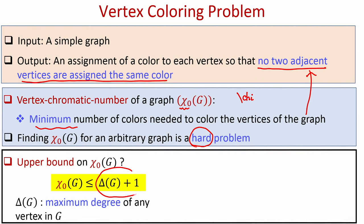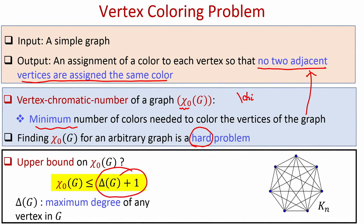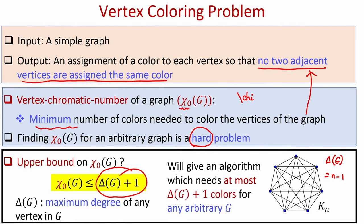We do not require more than Δ(G)+1 colors to color the vertices. We will give an algorithm that needs at most this many colors, but it need not be the optimal coloring, since it is possible the graph may not need Δ(G)+1 colors. In that sense, this algorithm may not be optimal.